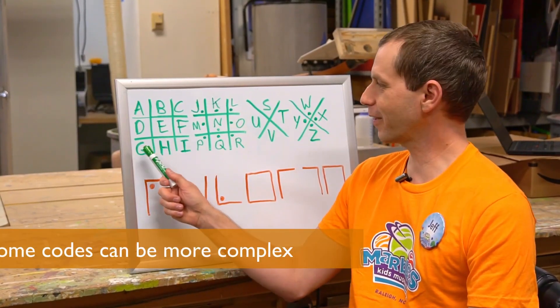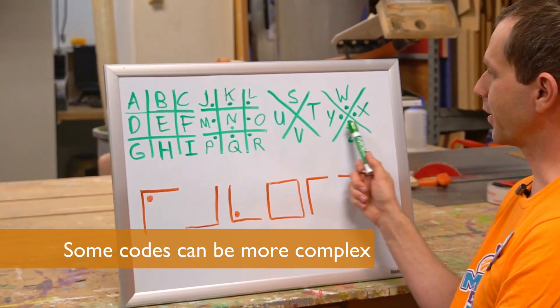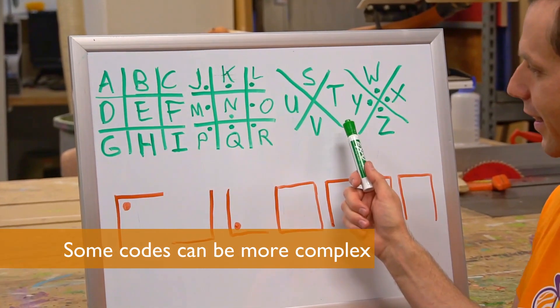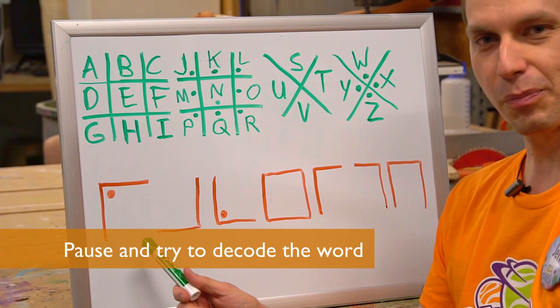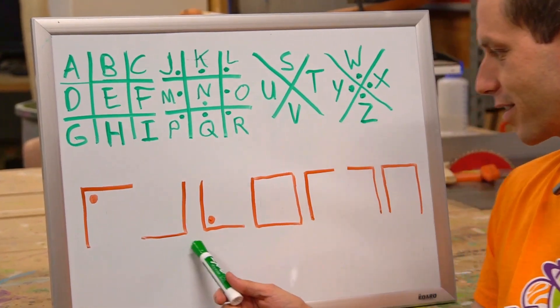Now that you know how a key works, I've written out a new key for you in a different code. This one's a little bit more complicated. I've also written out a secret message. I challenge you to pause the video now and see if you can decode this message.